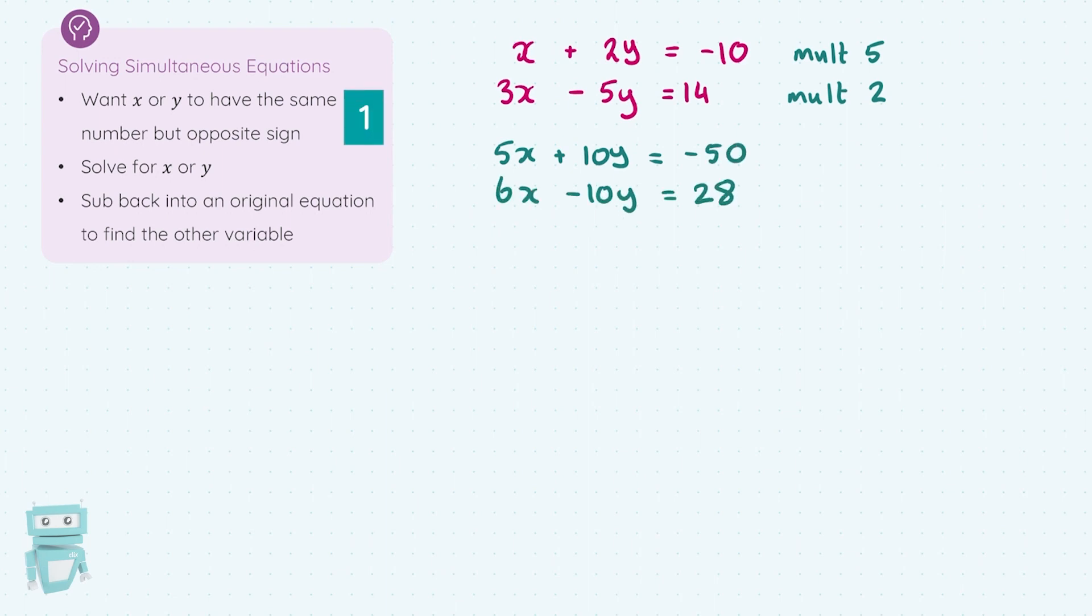Step one is complete. We have x or y with the same number but opposite sign. I'm going to draw my line here and add the two equations together. So I'm going 5x plus 6x, which is 11x. 10y take away 10y is 0. And I have minus 50 plus 28, which gives me minus 22. So what I'll do from here is solve for x by dividing both sides by 11 and get x equals minus 2.